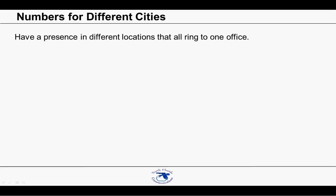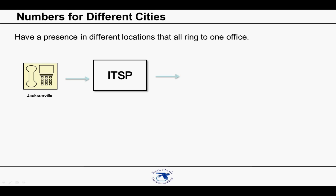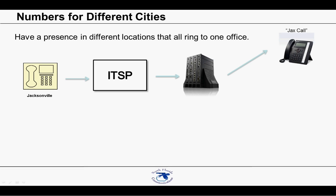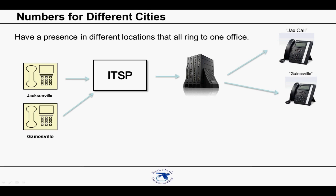Now let's take a look at something else we can do with SIP trunks. Let's say your main office is located in Jacksonville, but you want to have a presence in other cities. Perhaps you have employees who work in those cities, but you want all calls routed to the Jacksonville office. You would have a DID number for local calls coming from the Jacksonville market, and those calls would be sent to your ITSP, who would then send them via the internet to your phone system. With SIP trunking, we can assign phone numbers from different cities. For example, let's say your company also has a Gainesville number. Whenever somebody calls Gainesville locally, the call is routed to your ITSP, who sends it to your phone system. The phone system sends the call to the proper phones and displays 'Gainesville' on the LCD so that your employees know where the call is from and how to handle it properly.